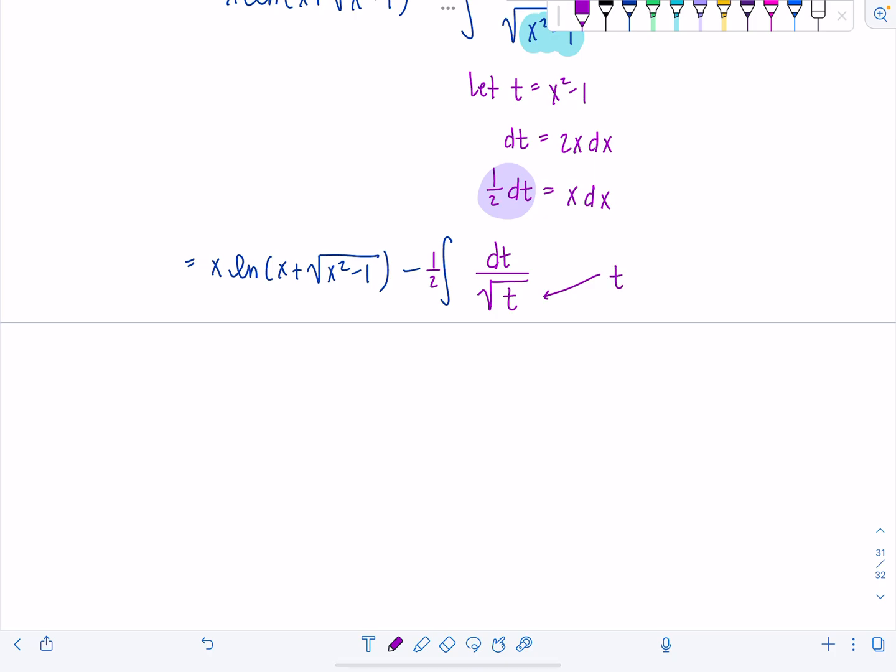All right. Square root of t in the denominator. Remember, that's t to the negative 1 half. So when I anti-differentiate, I'm going to add 1 to the exponent. Divide by the new exponent, which is the same as multiplying by the reciprocal. And then I still have that other 1 half in the front. Yes? Plus c.